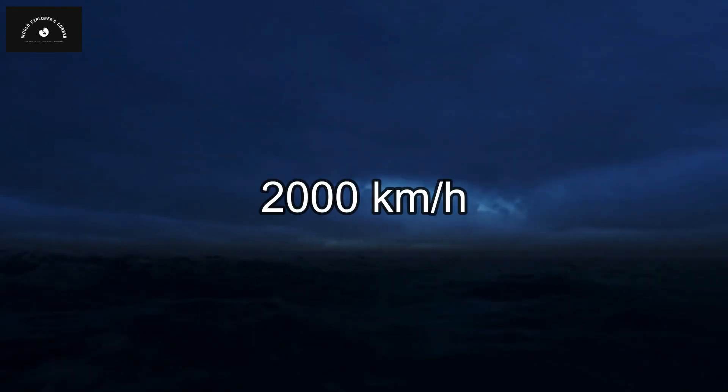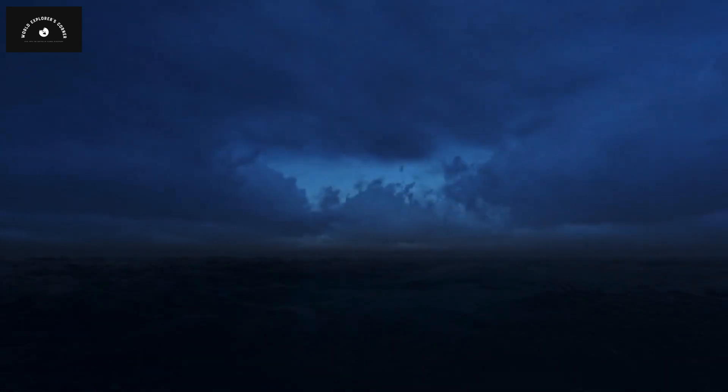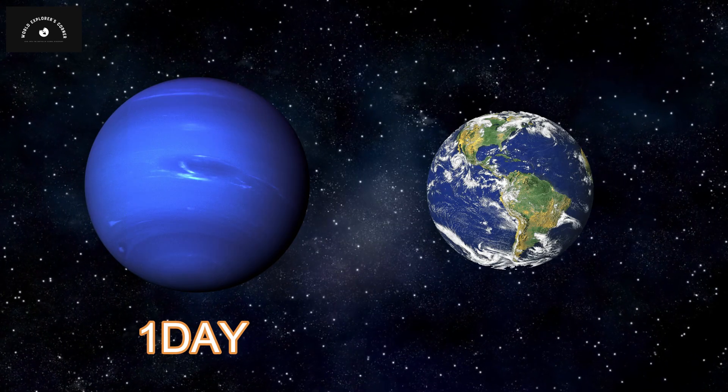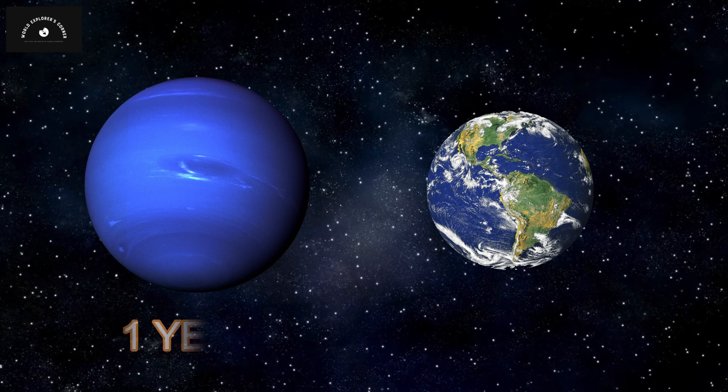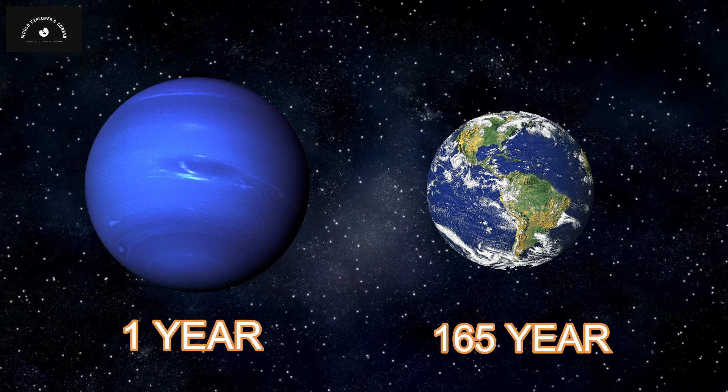NASA describes it as a realm of colossal icy storms, with winds reaching speeds of up to 2,000 kilometers per hour. A Neptune day lasts about 16 Earth hours, while a Neptune year spans around 165 Earth years due to its immense orbital distance.